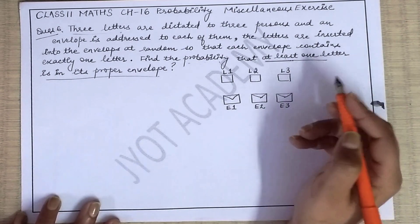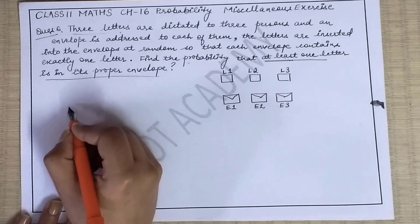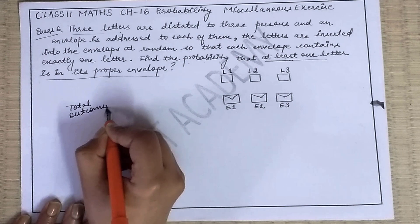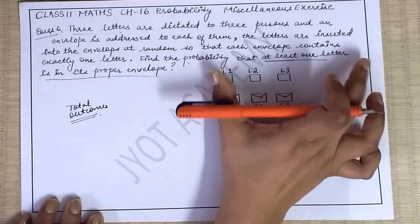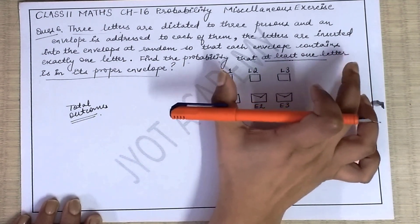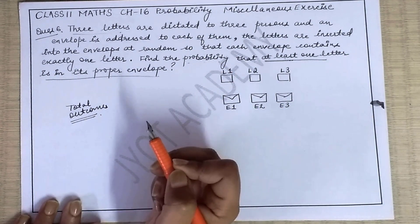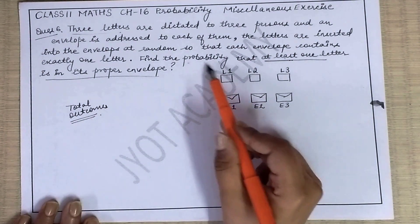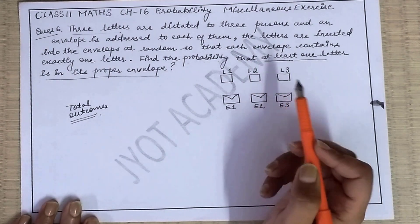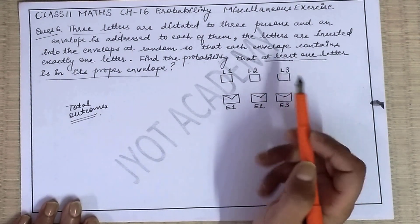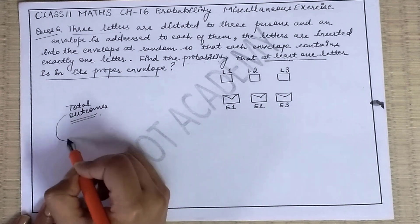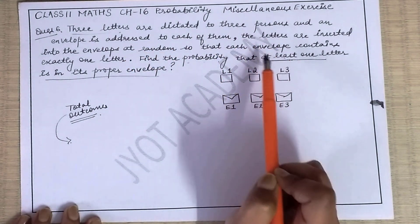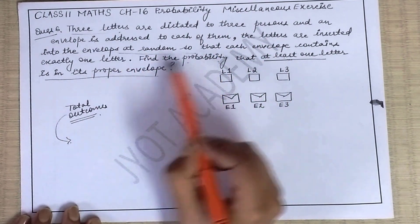First of all, to find the probability you need total outcomes, which will go in your denominator. Total outcomes are determined by how many ways the letters can be inserted randomly into the envelopes.